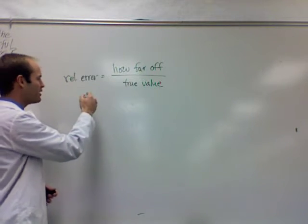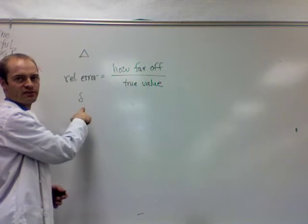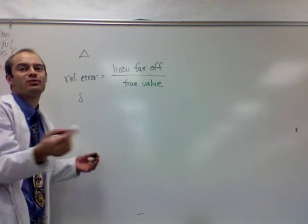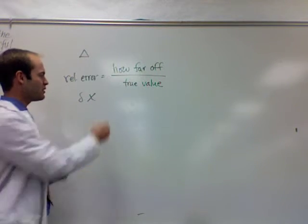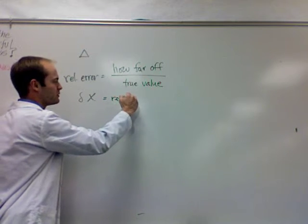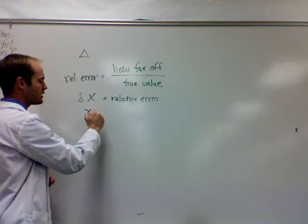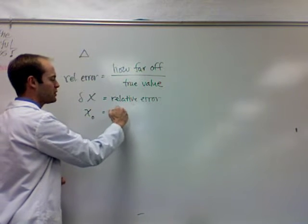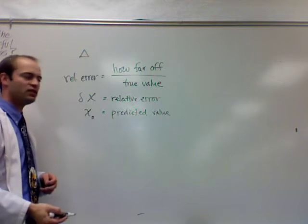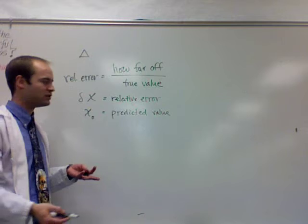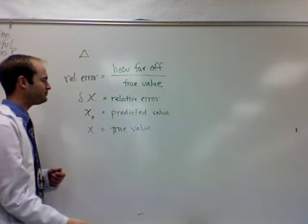Now I'm going to get a little more detailed. The symbols we use for relative error is a lowercase delta. You've used uppercase delta before, right? This is lowercase delta. I don't know why, but that's the symbol we use. So we're going to use x naught to be our predicted value. Maybe that's a value that you've predicted with some calculations or something. And x will represent the true value.